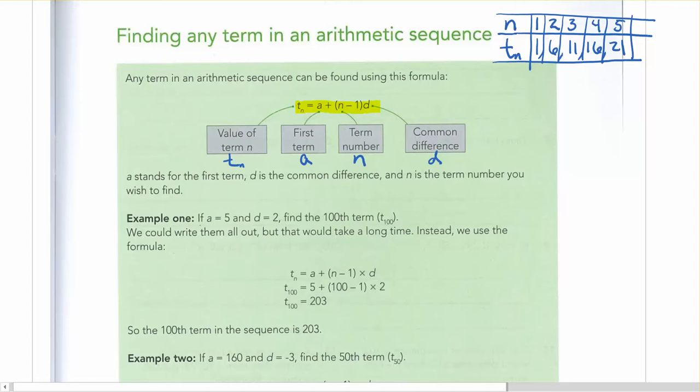If we look at an example, if a is equal to 5 and d is equal to 2, find the hundredth term. And this is an important thing to notice here, is that sometimes we'd write it out as the word hundredth term, and sometimes you write it as t sub 100, because that little 100 underneath means what's the value of the hundredth term.